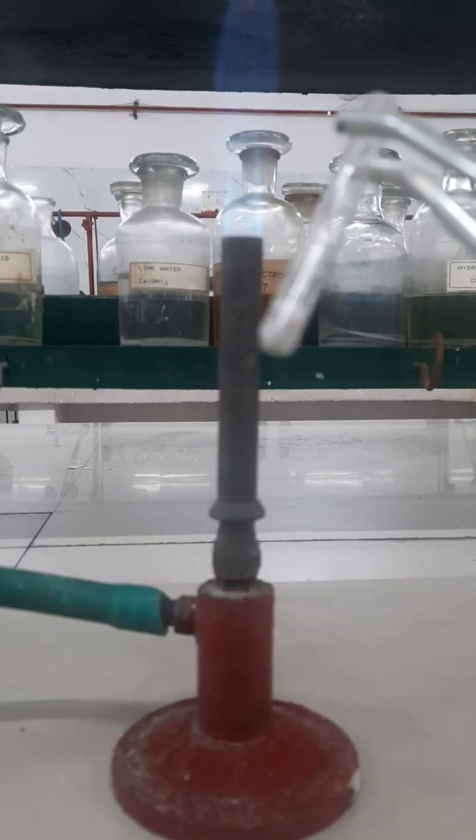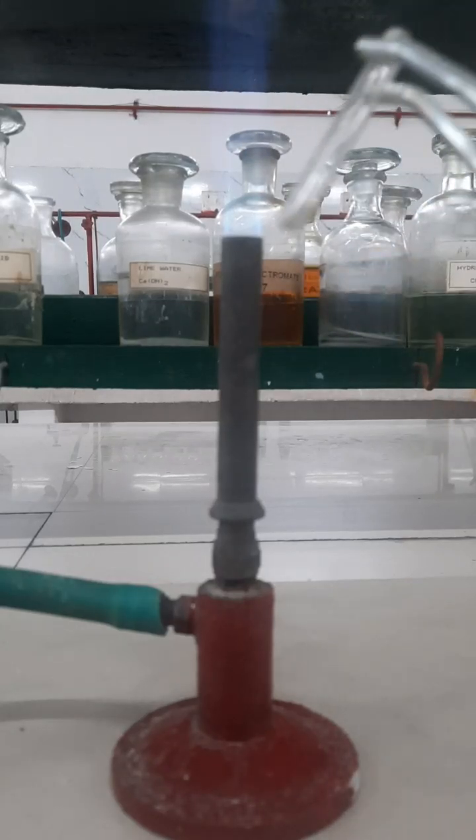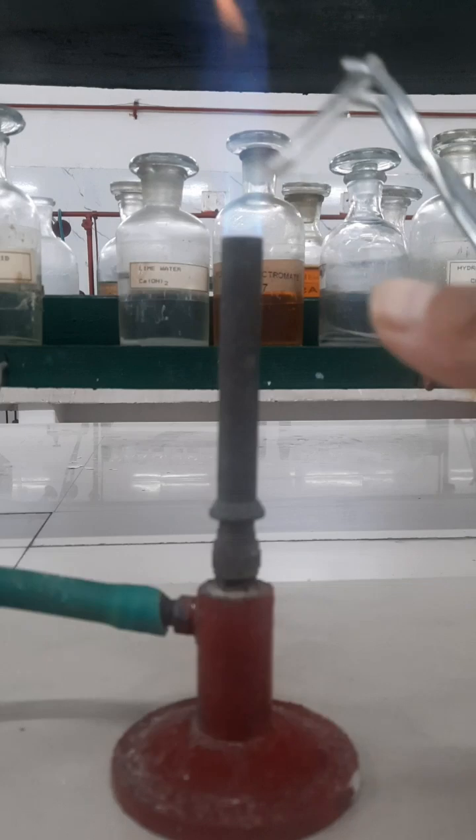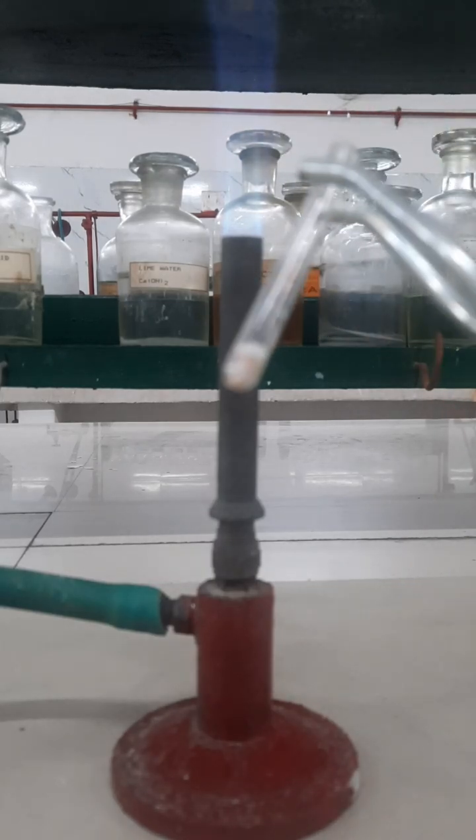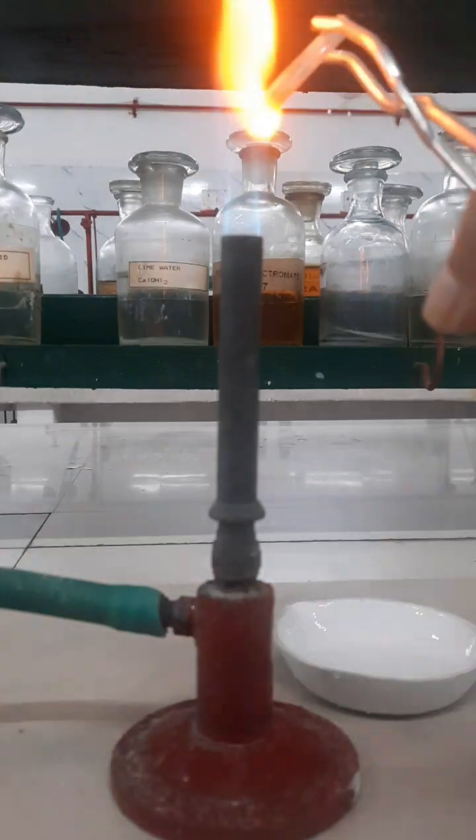Let's prepare a sodium fusion extract of thiourea. I have taken a small piece of sodium metal and thiourea in the ignition tube. First, I am heating gently such that the sodium metal melts and fuses with the thiourea.